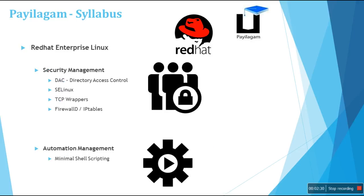In the security management section, we will teach you four layers of security in Red Hat: SELinux, TCP wrappers, firewalld, and IP tables. Firewalld belongs to Red Hat 7 and IP tables belongs to Red Hat 6.